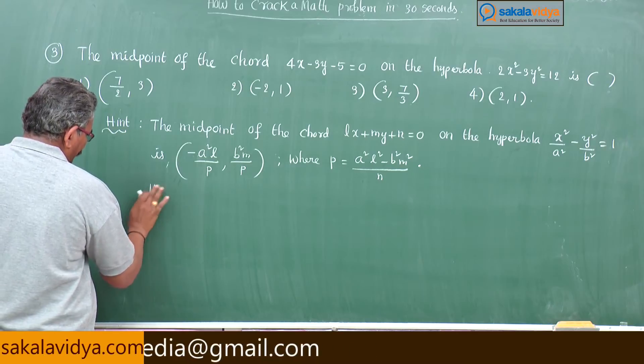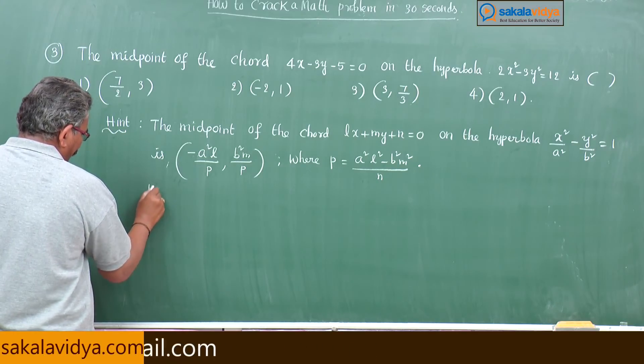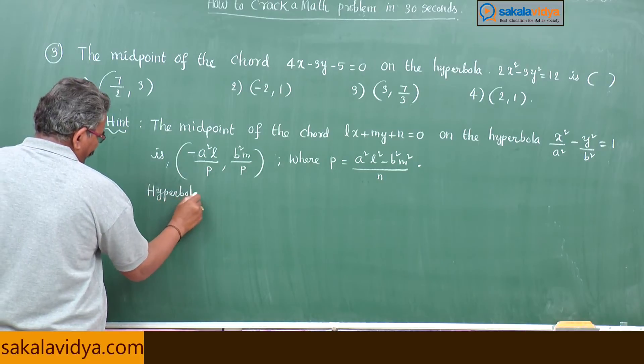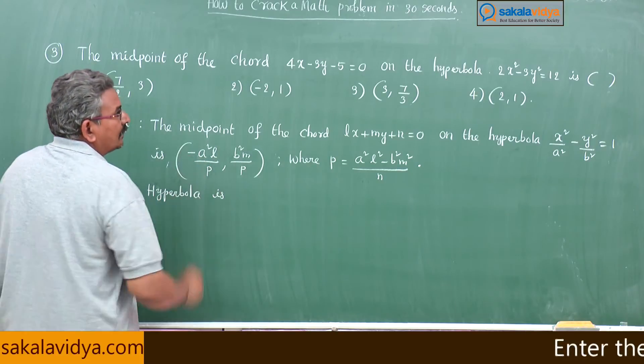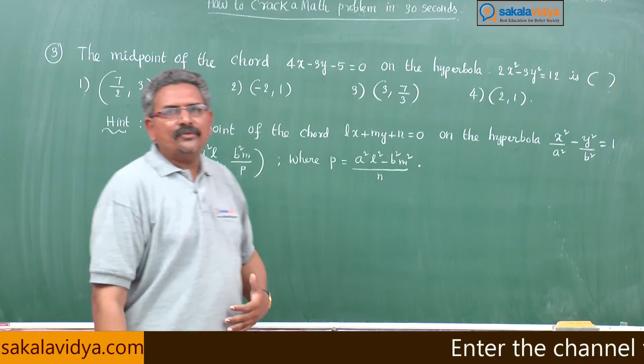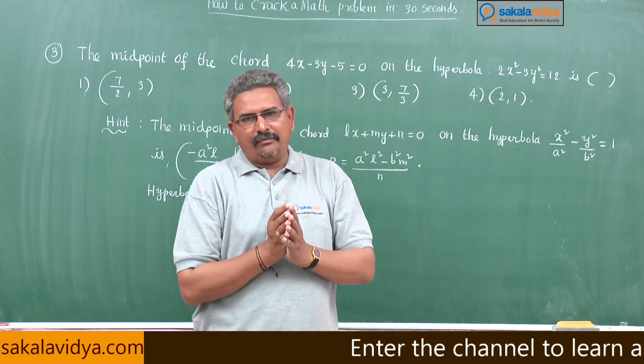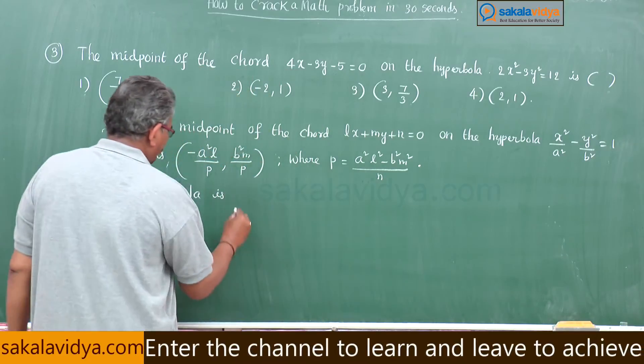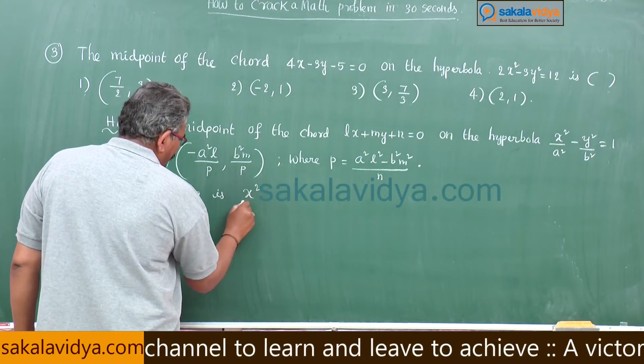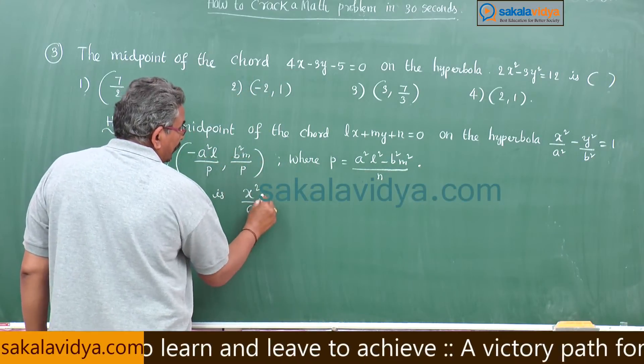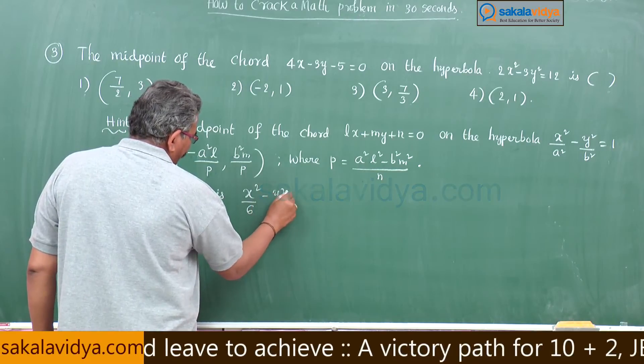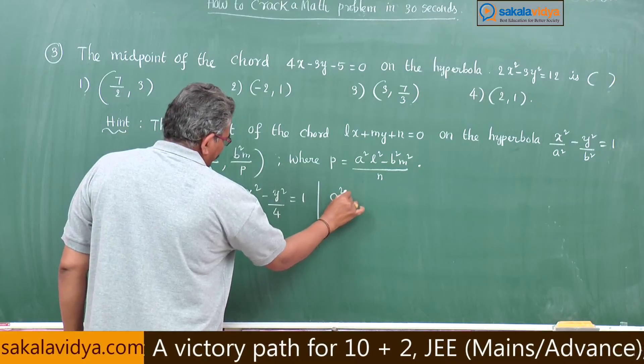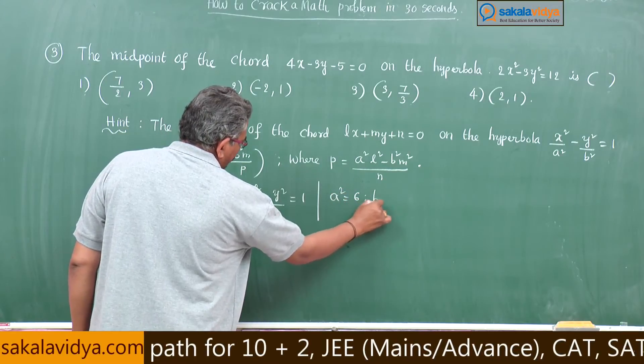Now let us do it. Here first hyperbola we have to put in the standard form. Having been divided by 12 on both sides this becomes x square by 6 minus y square by 4 equal to 1. Here a square equals 6, b square equals 4.